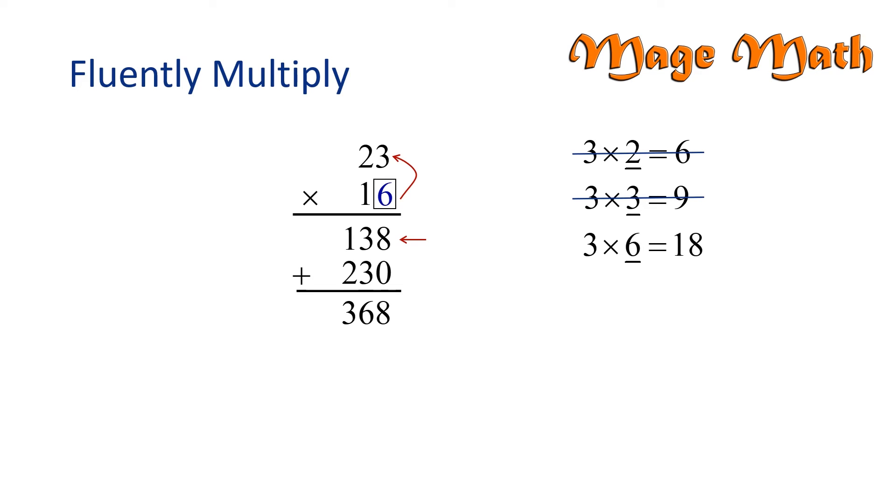We already know six times three is eighteen, so we would have written the eight below and carried the one up above. Now we would take six times two, which is twelve, and add the one. That gives us thirteen down below.